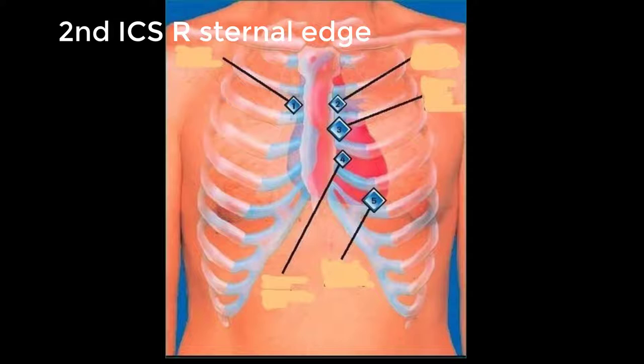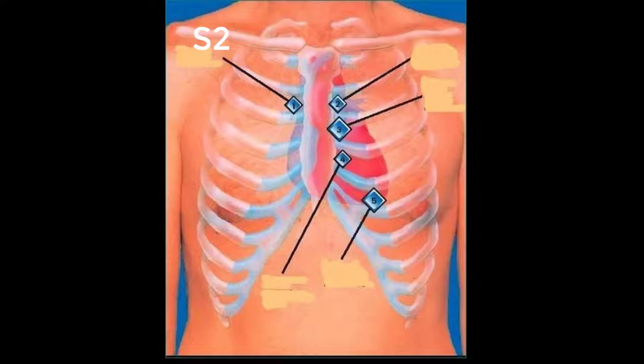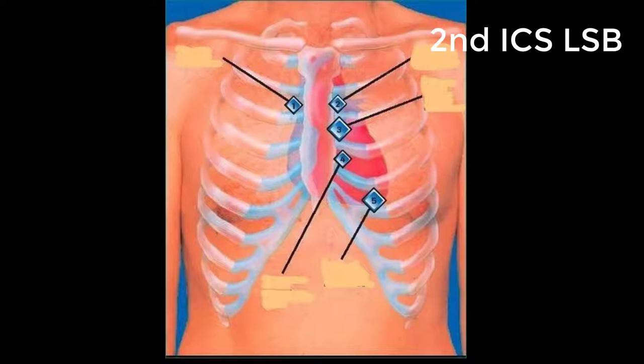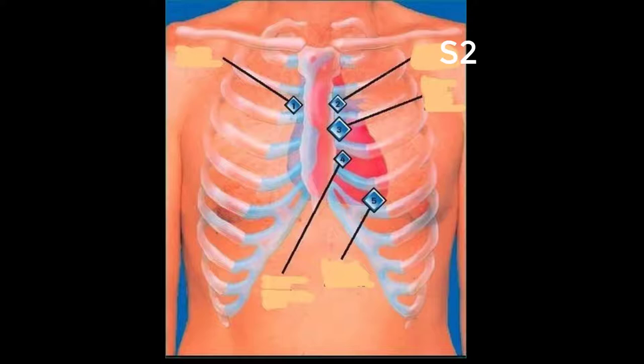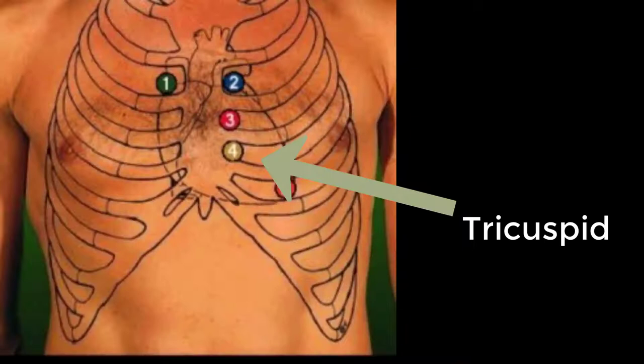Loud S2 in the aortic area may indicate systemic hypertension. Pulmonic area: place the diaphragm at the second intercostal space, left sternal edge. This is the anatomical landmark for the pulmonary valve. Listen for at least five seconds for the second heart sound, which represents the pulmonary valve closing. Loud S2 in this area may correlate with increased pulmonary artery pressure, such as what can be observed in patients with COPD.